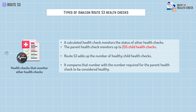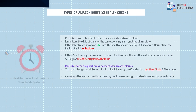AWS also has a calculated health check that lets you monitor a bunch of other health checks at once. You can set up a parent health check that monitors up to 255 child health checks. The parent health check looks at how many of these child health checks are healthy and compares that to a configured threshold. If enough child health checks are healthy, the parent health check is also considered healthy — it's a way to quickly see if a bunch of different resources are working properly without checking each one individually.